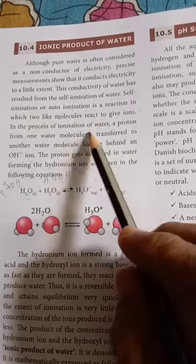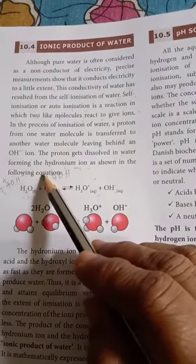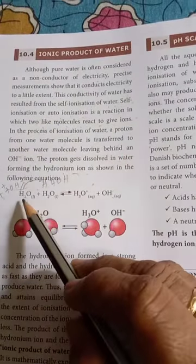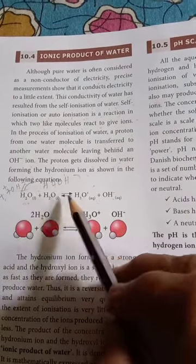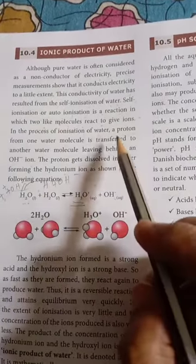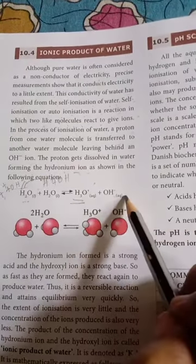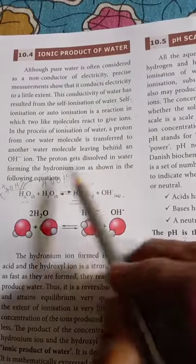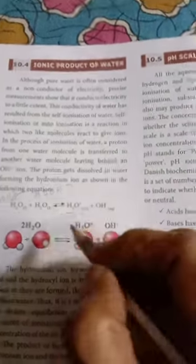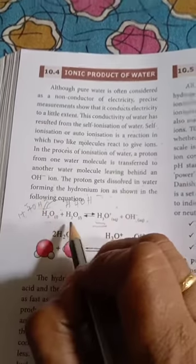In this process of ionization of water, a proton from one water molecule, H plus, goes to another water molecule and forms hydronium ion H3O plus. This water molecule leaves behind OH minus ion. So the proton gets dissolved in water forming hydronium ion. Here H plus and OH minus, and here H2O.